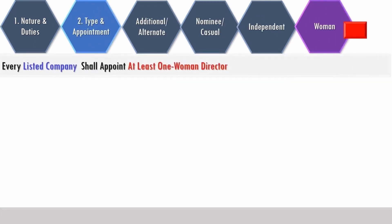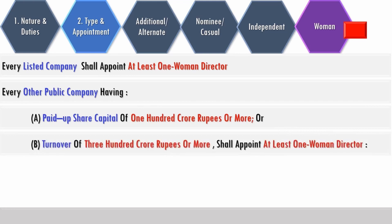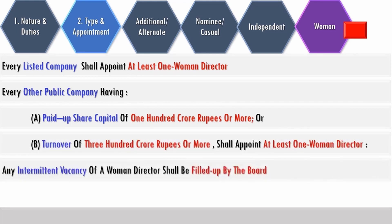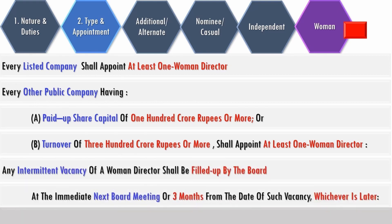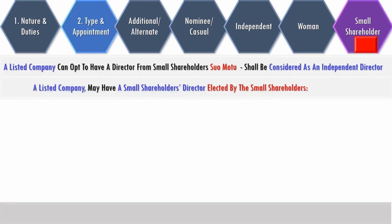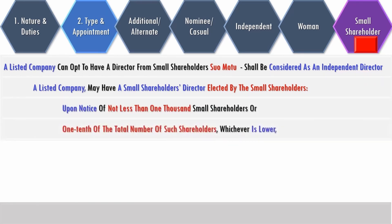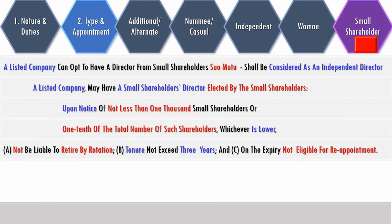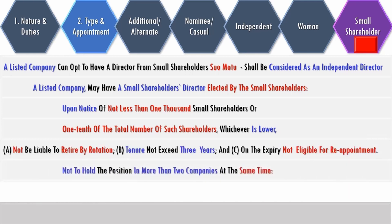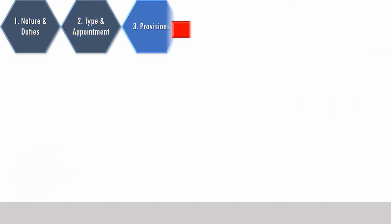Every listed company is required to have at least one woman director. Every other public company having a paid-up share capital of rupees 100 crore or more or a turnover of 300 crore or more shall appoint at least one woman director. Any intermittent vacancy of a woman director is to be filled up by the board at the immediate next board meeting or within three months from the date of such vacancy, whichever is later. A listed company can opt for appointment of a small shareholder director, either suo motu considering them as an independent director, or elected by small shareholders upon notice from not less than one thousand small shareholders or one-tenth of the total number of such shareholders, whichever is lower. The small shareholder director is not liable to retire by rotation, with a tenure not exceeding three years; on expiry of the first term, they are not eligible for reappointment and cannot hold the position in more than two companies at the same time.